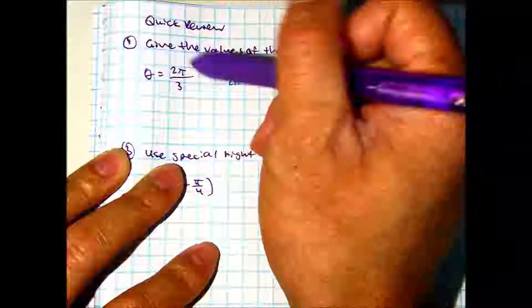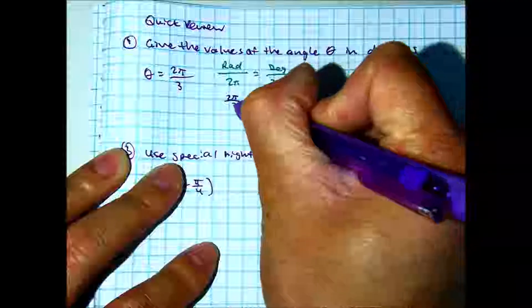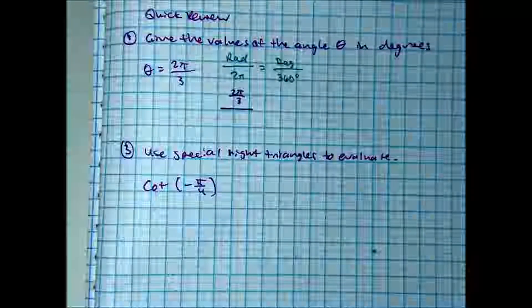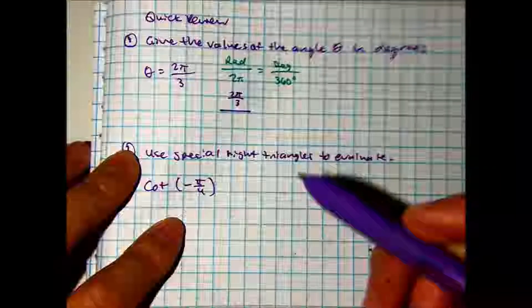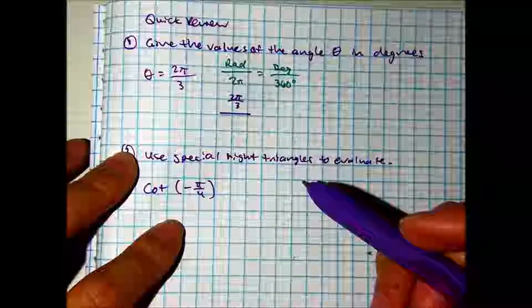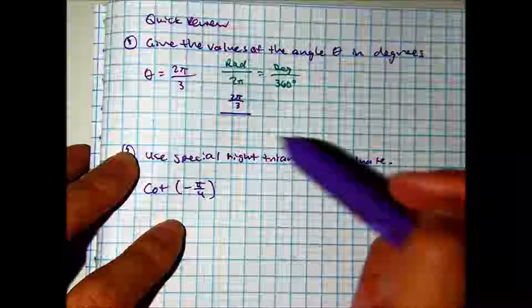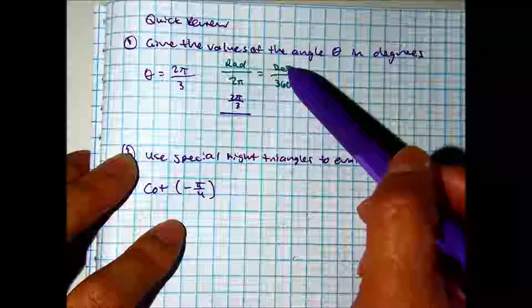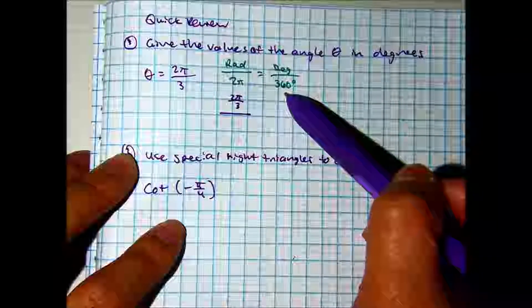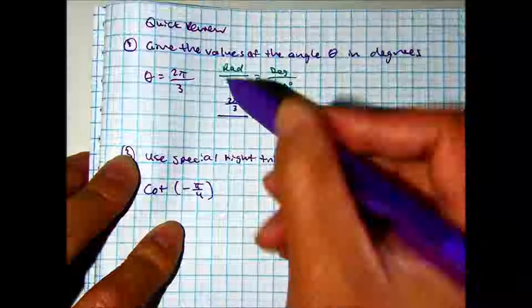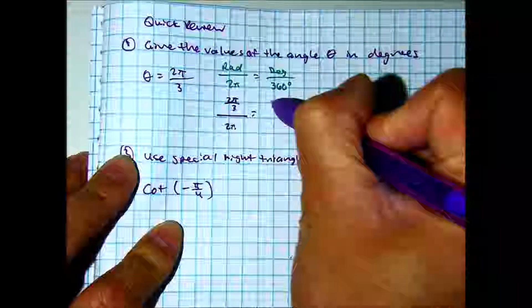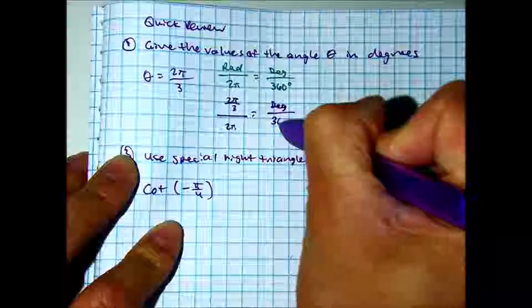So here I have radians, so that would be 2 pi over 3 over — let me change that for you. Always, always, always write down the formula or identity you're using. Radians over 2 pi equals degrees over 360. Radians is 2 pi over 3, over 2 pi. We're trying to solve for degrees, and you'll have 360 degrees.